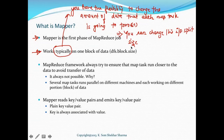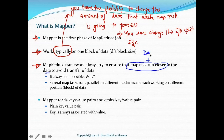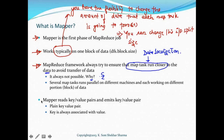Changing the input split size will change the number of input splits, which changes the number of map tasks. The MapReduce framework always tries to ensure that the map task runs closer to the data — a concept known as data localization — to avoid transferring data over the network. It is not always possible, but data localization applies only to map tasks, not to reduce tasks.